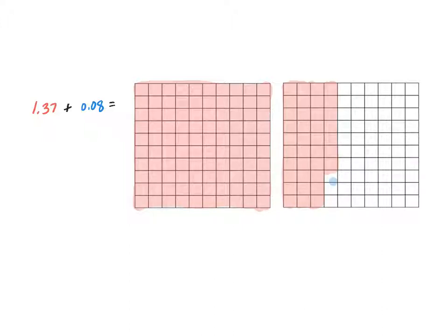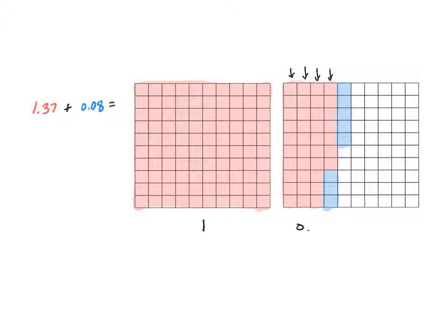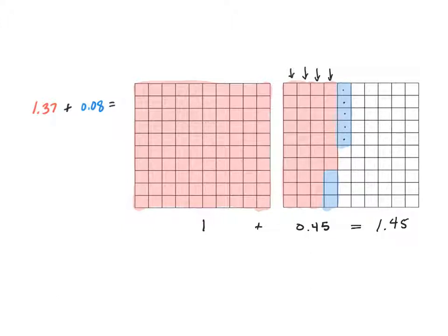Now I'm ready to model my next decimal — eight hundredths. I'll pick up where I left off. Eight hundredths is just counting eight individual squares: one, two, three, four, five, six, seven, eight. I've now modeled my entire problem and I'm ready to look at the model for the answer. On the second square I see four complete tenths shaded in and then five extra hundredths. Those three blue hundredths at the bottom are being counted as part of one of those four tenths. So altogether I have one whole plus forty-five hundredths, which is one and forty-five hundredths.